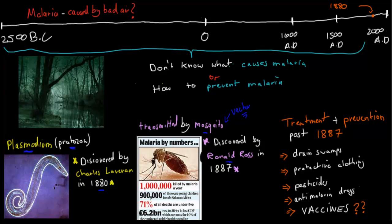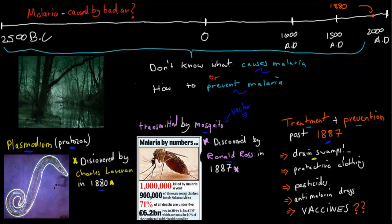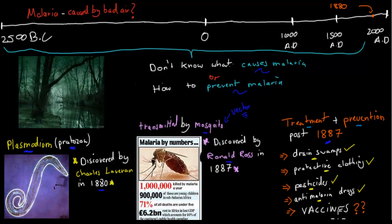Now that we knew the cause and transmission method, we could figure out ways to treat or prevent malaria. After Ronald Ross's discovery, we knew we should drain swamps because that's where mosquitoes breed — fewer swamps means fewer mosquitoes means fewer infections. We should wear protective clothing to reduce mosquito bites, use pesticides to kill mosquitoes that transport malaria, and use anti-malarial drugs to kill off the actual plasmodium and reduce the number of people who suffer badly.